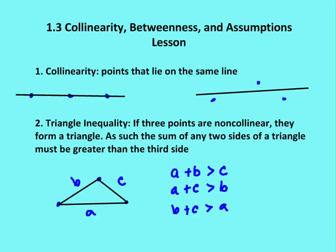All right, what is collinearity? Collinearity just means that there are points that lie on the same line. So in the example to the left, I can see that these three points are going to be collinear because they lie on the same line. These three points, however, are not collinear because they do not lie on the same line.